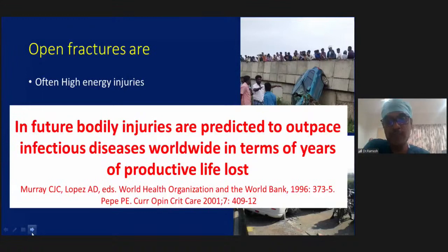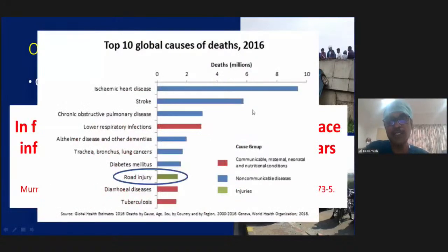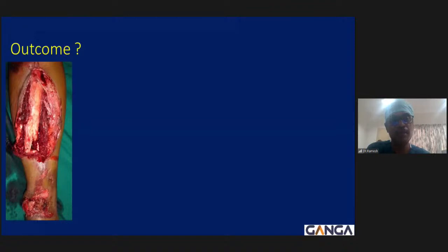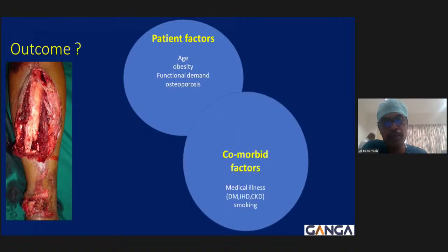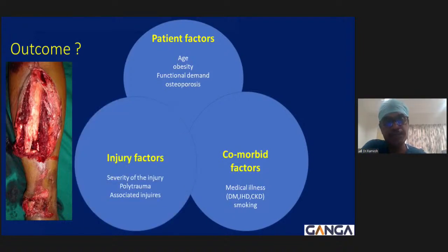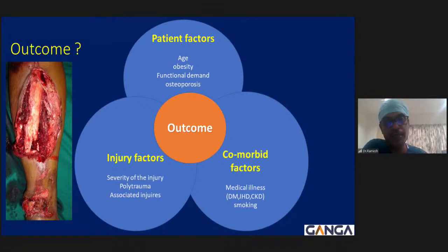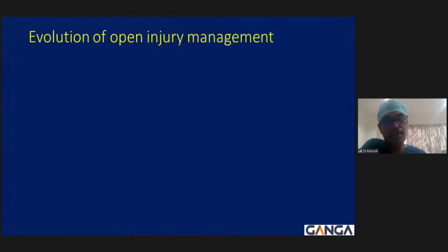The WHO predicted in 2001 that bodily injuries would overcome infectious disease worldwide in terms of productive life cost. Road injuries are currently eighth in the top 10 causes of death and are predicted to rise. When a patient arrives at the emergency department, patient factors — age, obesity, functional demand, bone quality, comorbidities like diabetes, ischemic heart disease, kidney disease, and smoking — all collectively influence outcome.